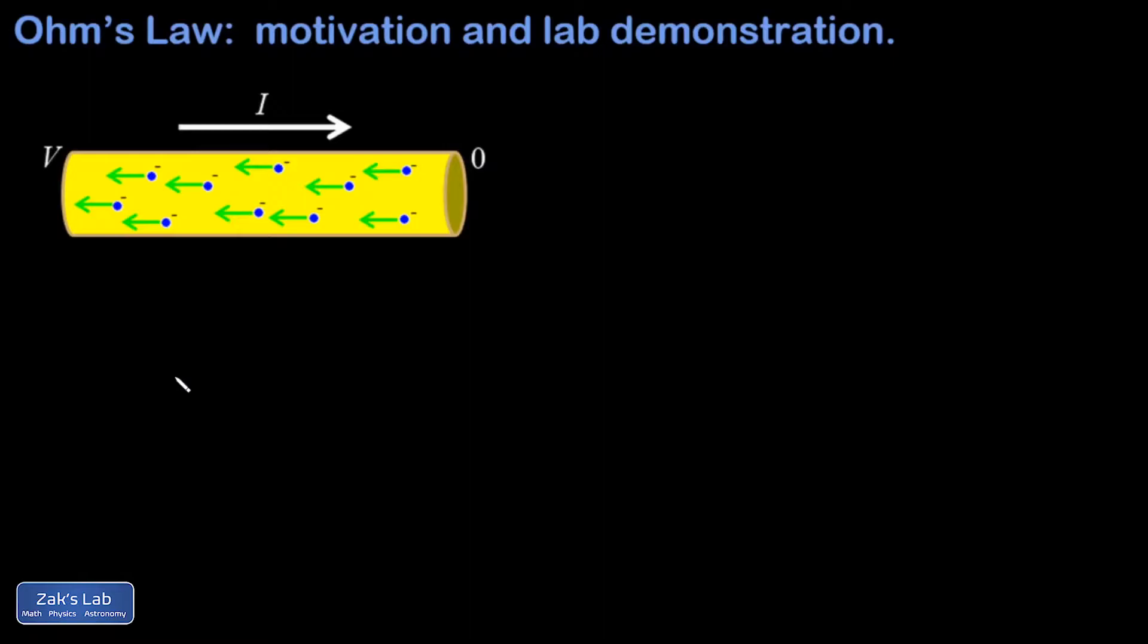The electrons are responding to an electric field in the conductor. So suppose we turn up the potential difference. We know that electric field scales with potential difference—it has units of volts per meter. So if the length of this thing stays the same and we double the voltage, it would double the field inside.